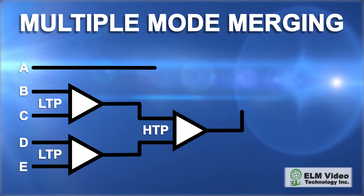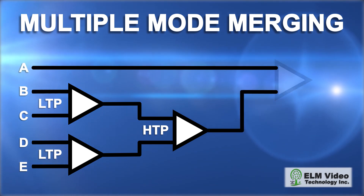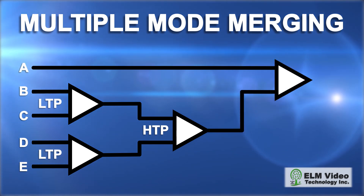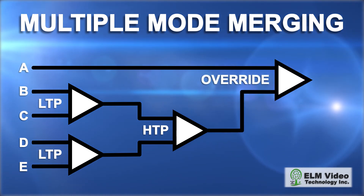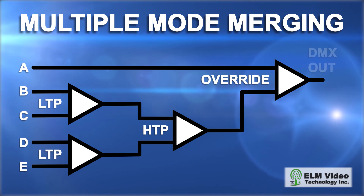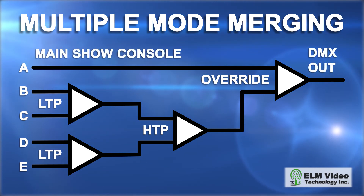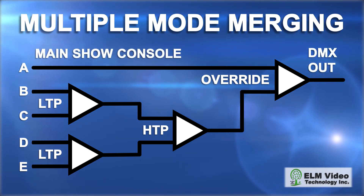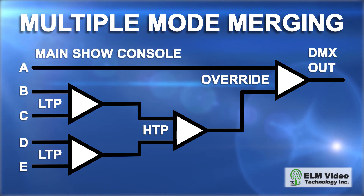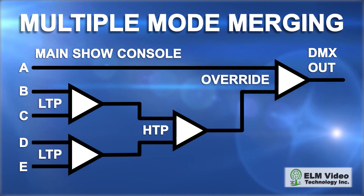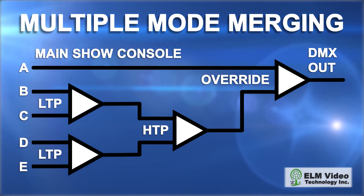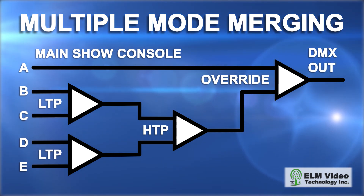And that output could then merge with another input that is in the override mode. That input could be a main show controller; when it is activated, it will override all the other inputs and take control of the DMX output.